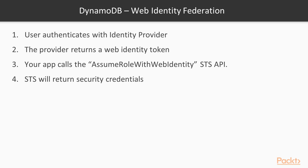Web Identity Federation allows users to authenticate with an identity provider such as Facebook, Google, or Amazon. The provider returns a Web Identity token after authenticating the user. Your application then calls the AssumeRoleWithWebIdentity STS API, providing this token. STS returns security credentials that allow access to DynamoDB, valid for 15 to 60 minutes, with a default of 60 minutes for that particular user through the specified application.